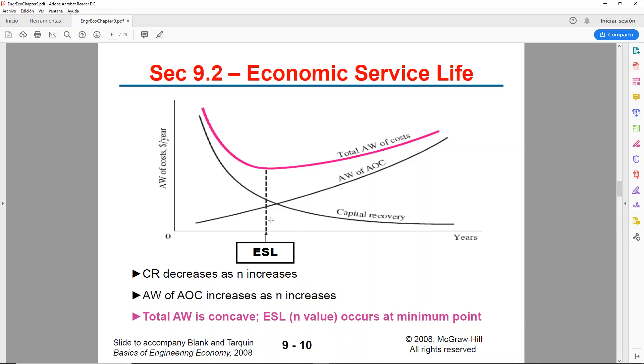So that means that it will be the year at which your alternative or your asset, your device, will cost you the least. And this ESL will be your n value.